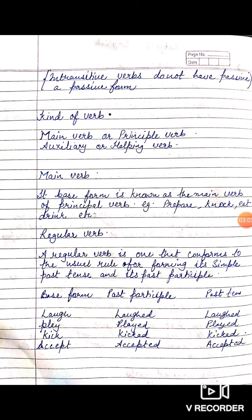The main verb is further classified into two types: regular verb and irregular verb. A regular verb is one that conforms to the usual rule for forming its simple past tense and past participle. Regular verbs use the same form for past tense and past participle. For example: laugh — laughed — laughed; play — played — played; kick — kicked — kicked; accept — accepted — accepted.